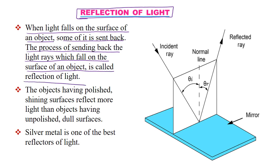यदि कोई light किसी surface पर incident कर रही है, this is the incident ray. कोई भी light जब किसी surface पर जाकर पड़ती है तो उसे हम लोग कहते हैं incident ray. वो reflect करती है — जिस direction से आई, उसी direction में कुछ angle से मुड़ करके reflect कर जाती है, तो उस ray को हम लोग कहते हैं reflected ray. This is the phenomena of reflection of light.